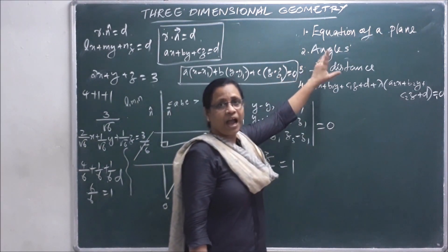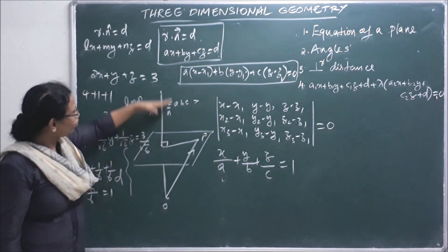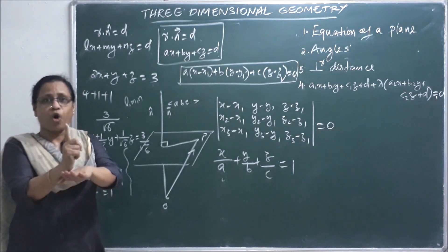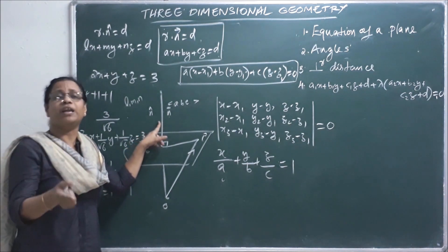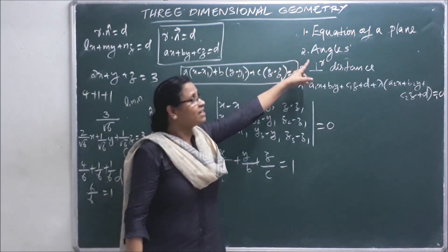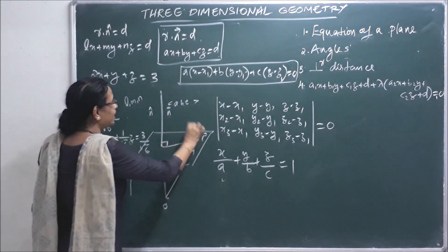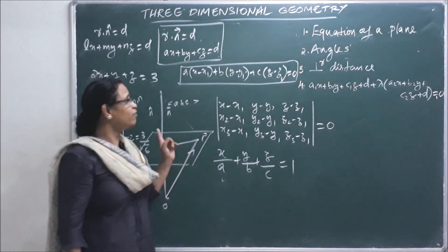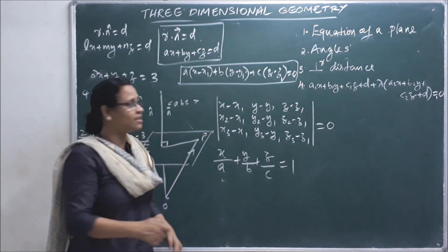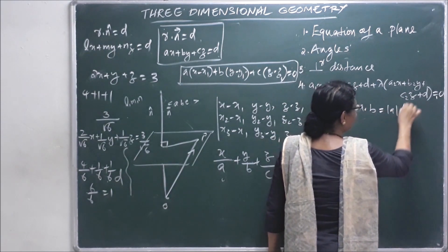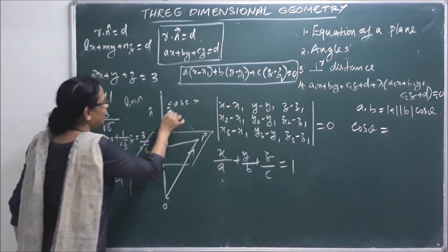The next topic is the angle between two planes. The normal vectors of the two planes give the angle. Using A dot B equal to |A||B| cos theta, we find cos theta equal to (n₁ dot n₂) divided by (|n₁| times |n₂|). This gives us the angle between the two planes.